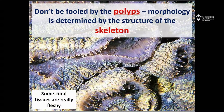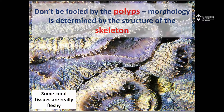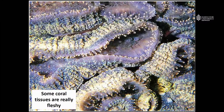Here's another example — this is actually a mound-shaped or massive colony. Again, these thick fleshy tissues are obscuring the underlying skeleton.